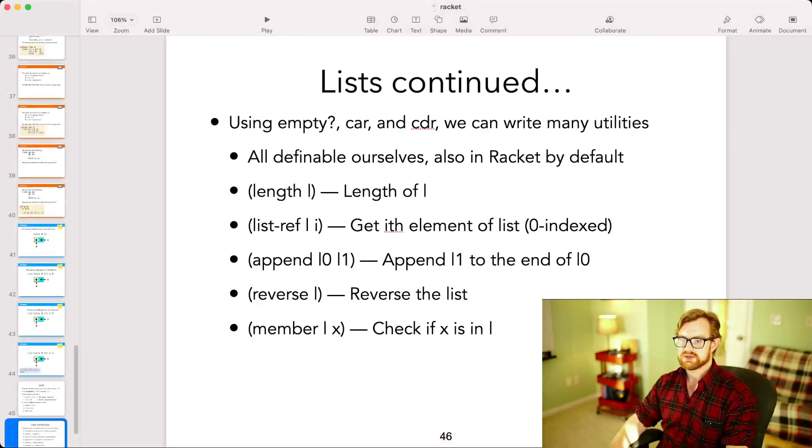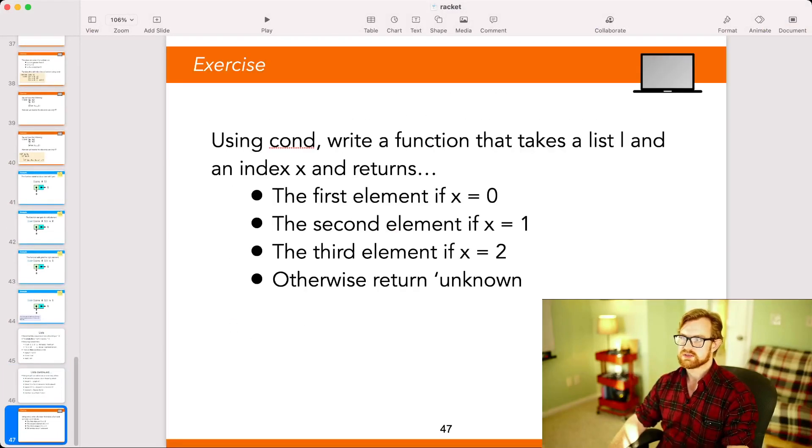Alright, so that's pretty much all the functions we need on lists. Let's wrap this up by tying things together using cond to write a function that takes a list L, along with an index x, and then returns the first element if the element x is 0, the second if x is equal to 1, the third if x is equal to 2, or otherwise return the value tick unknown.